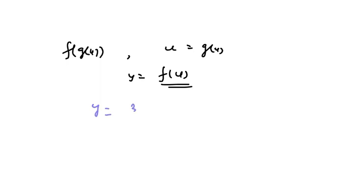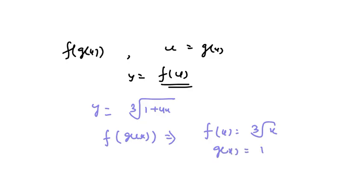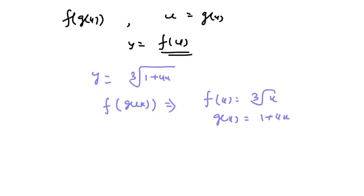First of all, we have y equal to the cube root of 1 plus 4x. We can write this as f(g(u)). From here, f(x) will be the cube root of x, and g(x) will be 1 plus 4x.